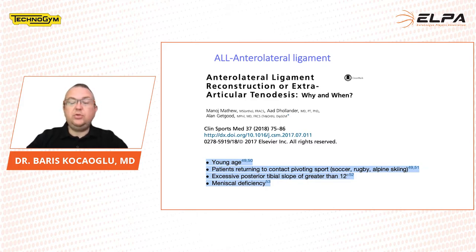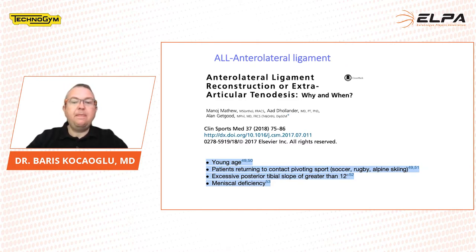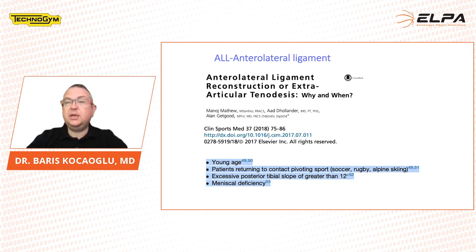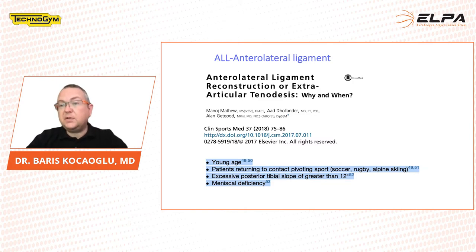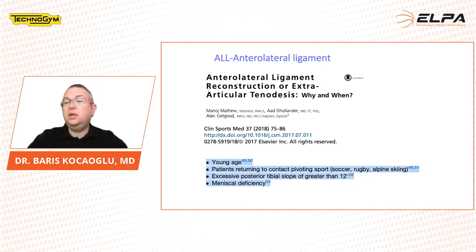In which type of patients do we choose ALL? It is better to do it in young patients who are collision athletes requiring pivoting, like basketball, and patients who have a tibial slope higher than 12 degrees. If the patient has a meniscus deficiency — a torn or resected meniscus — I recommend ALL, anterolateral ligament reconstruction.